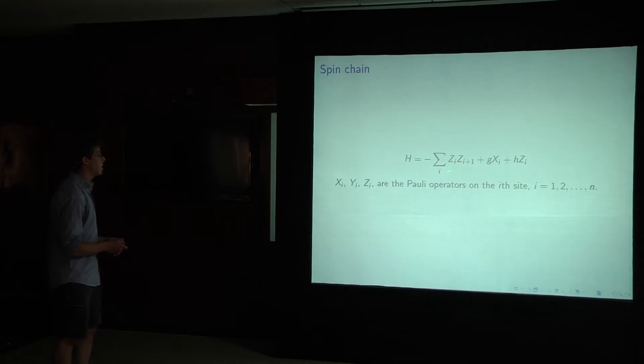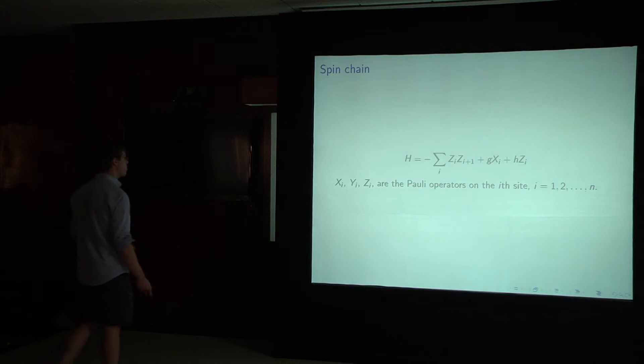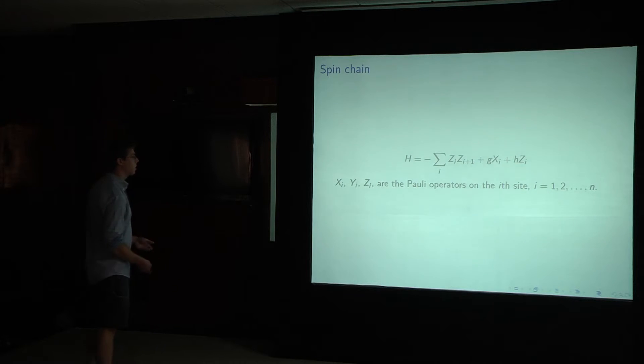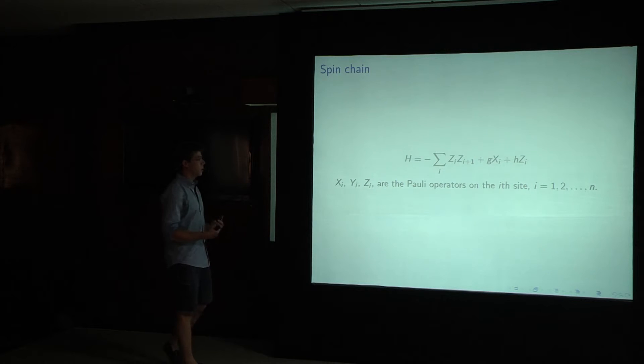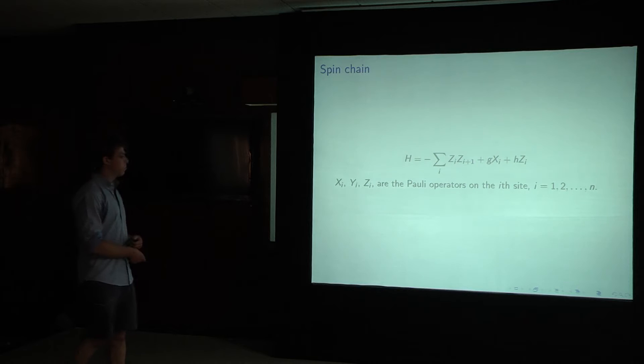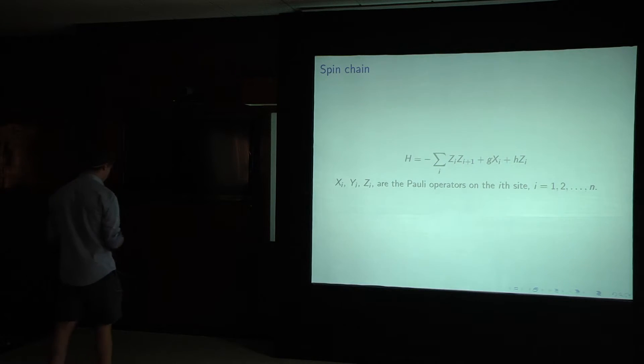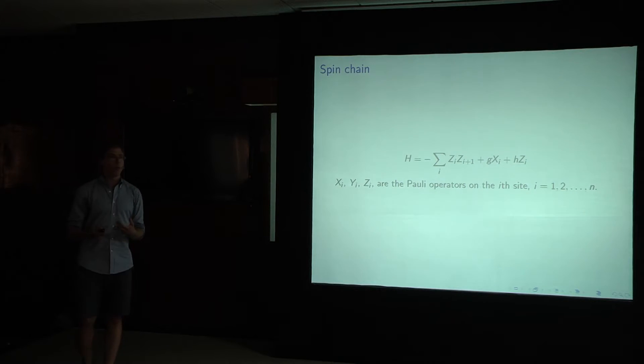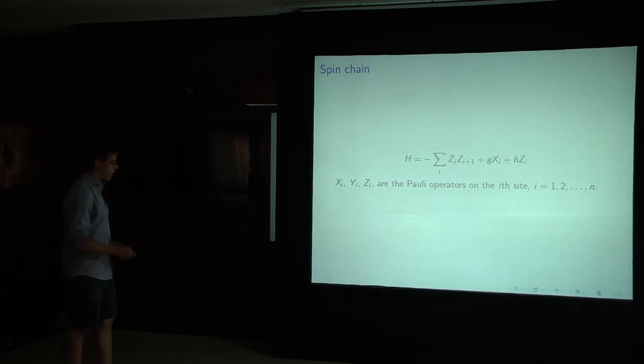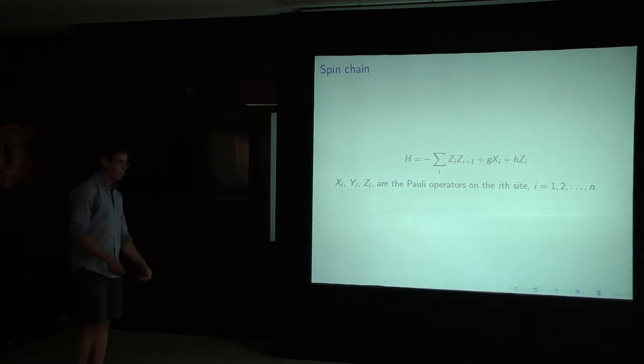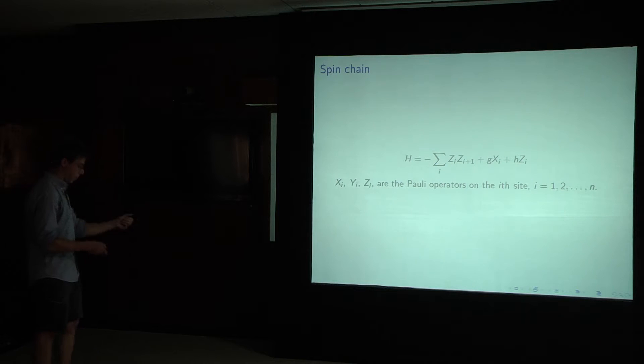My Hamiltonian has an Ising-like nearest neighbor term. It has a transverse field, and it has a parallel field. And everything I say should be taken to be statements about generic Hamiltonian time evolution. When I have to, when I use numerics, I'll of course have to pick values for these parameters. But what's really important is just that the parameters are outside the region of integrability. But otherwise, what I'm saying should hold pretty generally. And the length of the spin chain just needs to be large, pretty much greater than 2 to see these effects.